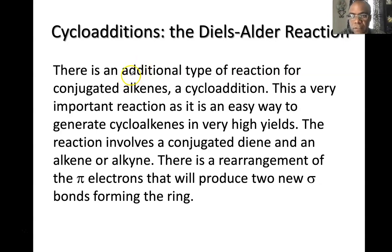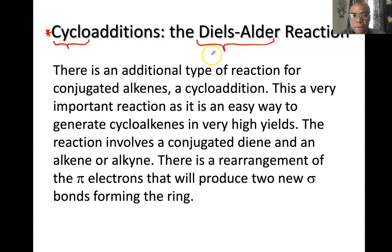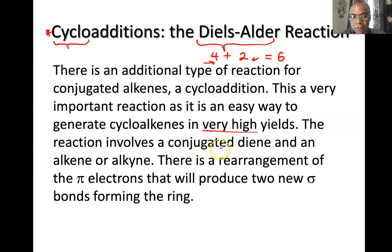To finish up the reactions of alkenes, we will talk about cycloadditions, which means you're adding two alkenes together and making a ring. The scientists Diels and his postdoc research assistant Alder discovered a reaction called the Diels-Alder 4+2 cycloaddition, because you'll be adding four pi electrons and two pi electrons to make a six-membered ring. It's very easy to do, gives high yields, and involves a lot of heating and a conjugated diene.